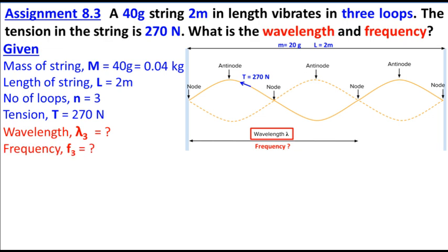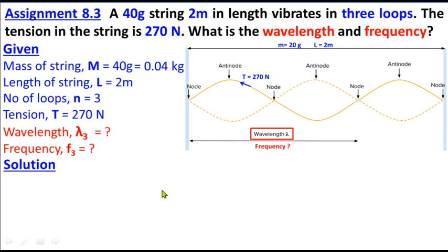Since 3 loops are forming, this is the third harmonic. So I've written lambda_3 and f_3 alongside, but normally when I read it I'll just say lambda. The subscript 3 notation is just for clarity. Let's move toward the solution.